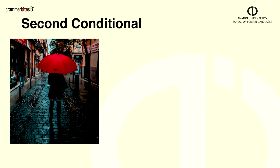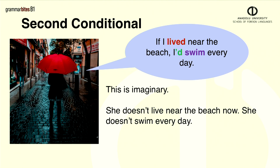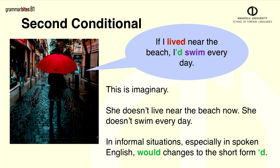Here's another example. If I lived near the beach, I'd swim every day. Again, this is imaginary. She doesn't live near the beach now, so she doesn't swim every day. In informal situations, especially in spoken English, would normally changes to the short form, apostrophe d, as in I'd or she'd.